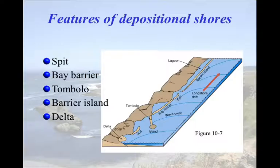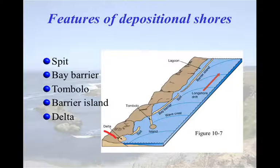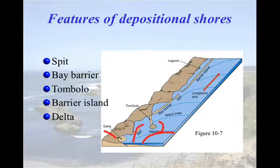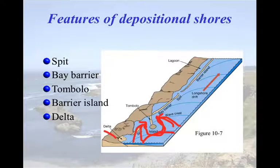This diagram shows the typical depositional features discussed, including a delta — which requires a river for its formation. Regarding the tombolo: as a wave approaches, it begins to refract around features. Waves refract around the island from both sides, and when they meet, they drop their sediment. That's why the tombolo itself is always perpendicular to the waves.